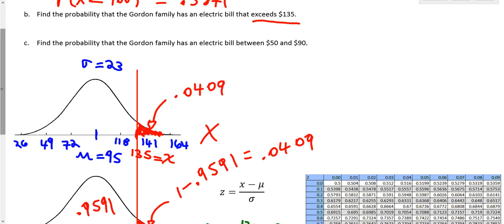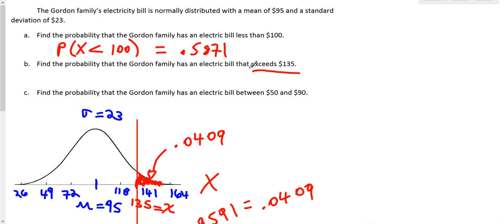So that the answer to the question here, find the probability that the Gordon family has an electric bill that exceeds 135. Well, if this is the distribution, the area to the right of 135 is .0409. So the probability that the Gordon family electric bill is greater than 135 dollars is equal to .0409 or approximately 4.1 percent. That is how you'd find the probability that a certain value is greater than or the probability that a certain value is going to exceed a given value of x.